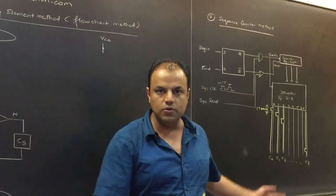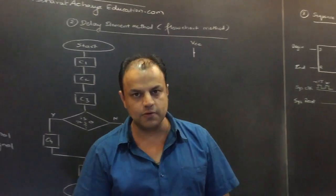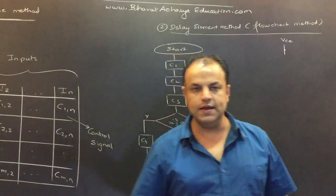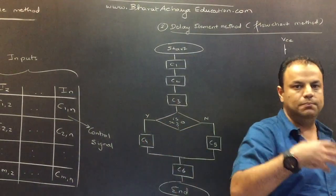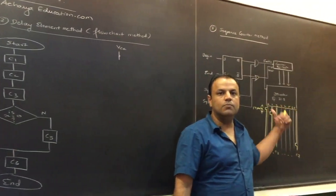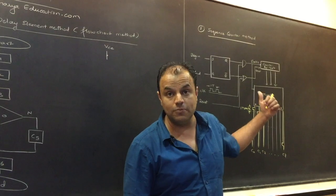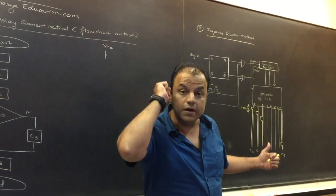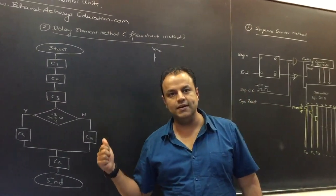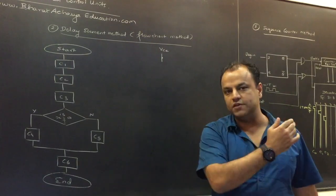You may get two separate five-mark questions on this, or you may get the whole thing as a 10-mark question. When you get the whole thing as a 10-mark question, do not spend too much time on the first two methods — they are just the build-up that leads to the sequence counter method. This is where all your marks are. But if you want to understand, spend time on the delay element method, as it gives rise to the sequence counter method.